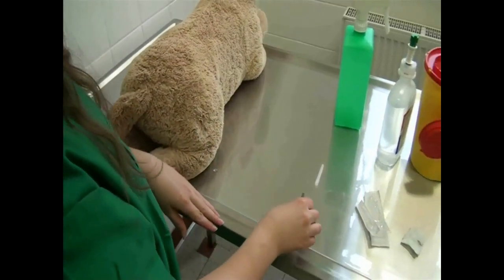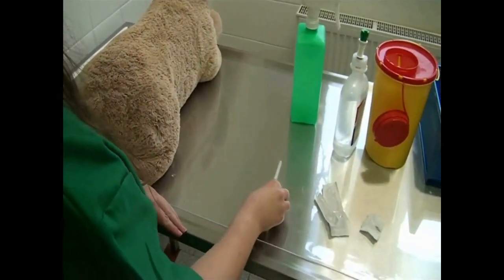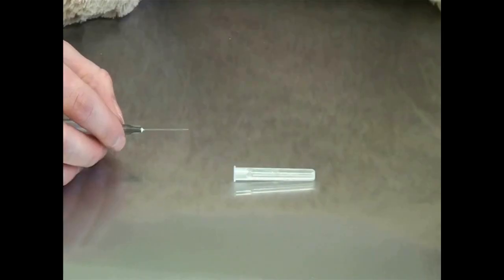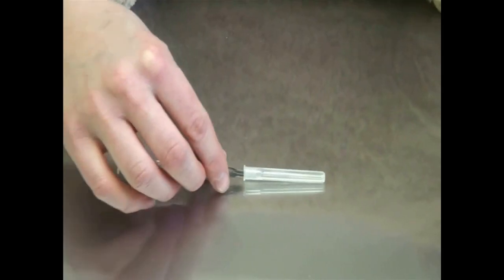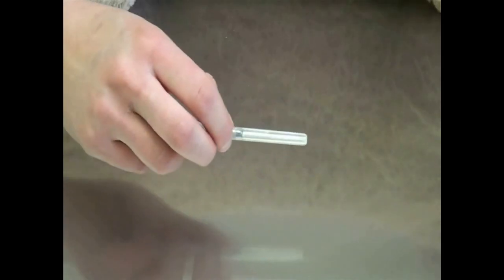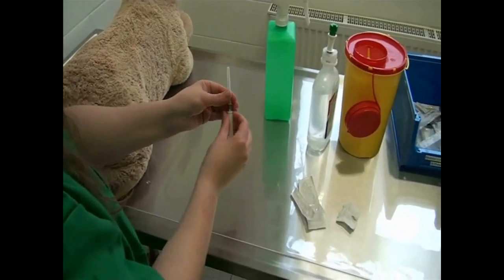Now dispose of the needle correctly. This is shown here in slow motion. Use a one handed technique to recap the syringe and then dispose of the needle and cap in a sharps bin.